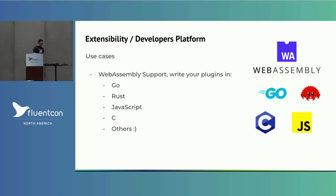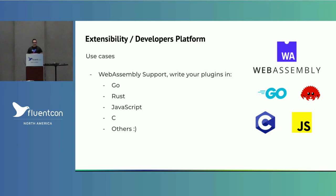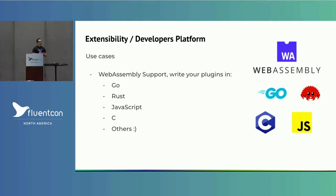The last thing people are asking for — and we got a ticket today — is the ability to write output plugins in Rust. Fluent Bit is written in C, and we get requirements to write plugins in Go, Rust, JavaScript, and other languages. So we're going to implement a WebAssembly layer on top of Fluent Bit. We tried this year but it was too much work, so it got deferred to next year. With WebAssembly, users can create their own filters and plugins in JavaScript, C, Go, Rust, or whatever they want.